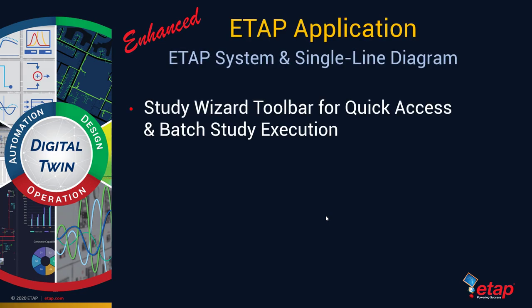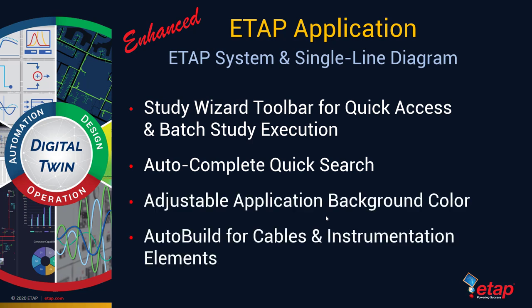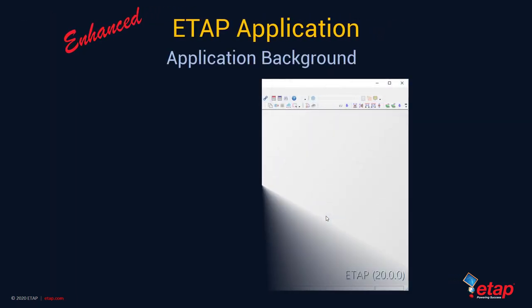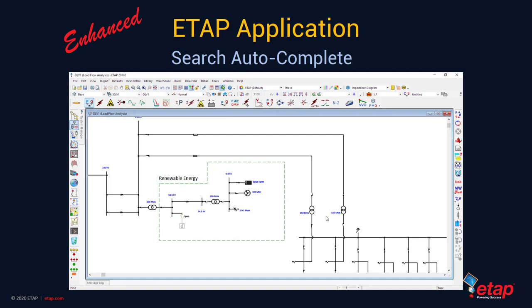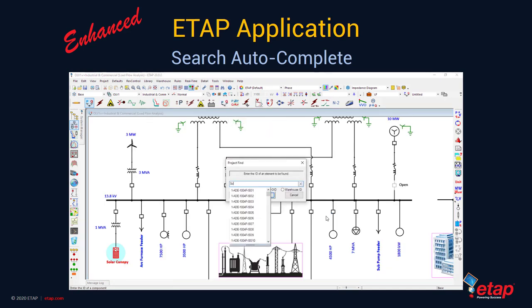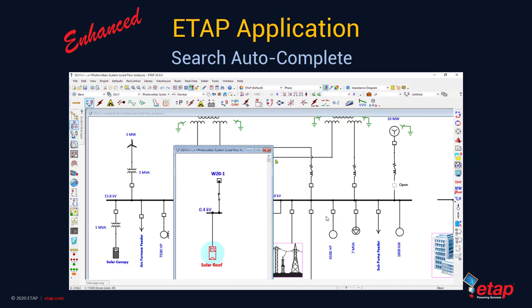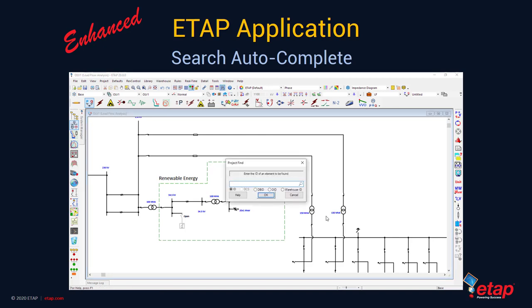The ETAP application itself has been enhanced as well. A Study Wizard toolbar has been provided for quick access and batch study execution. We've added auto-complete for quick search, an adjustable application background, improved auto-build for cables and instrumentation elements, and a full screen mode. The ETAP application background can be customized by changing preferences and picking your favorite color. The search auto-complete can be accessed using the shortcut or find tool — as you type, the program automatically finds the best match, and pressing enter or OK automatically finds that component on the one-line diagram.